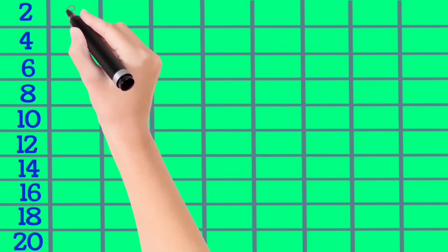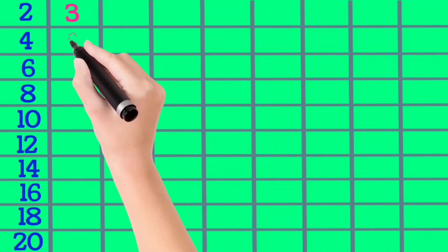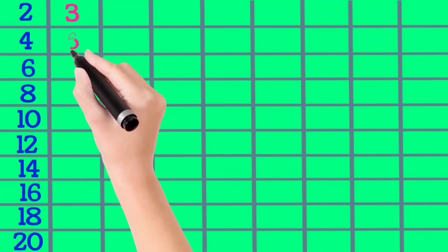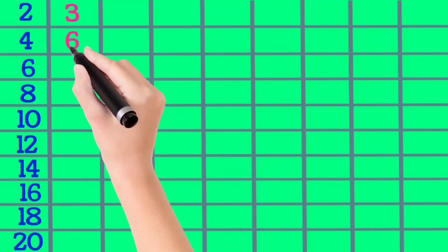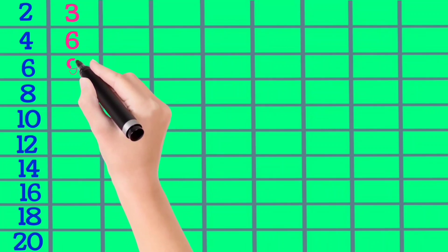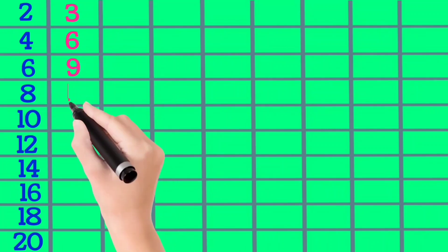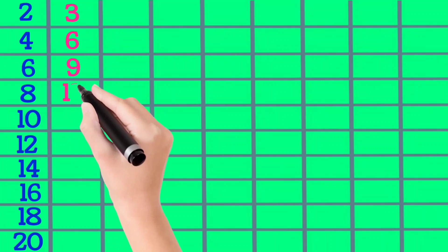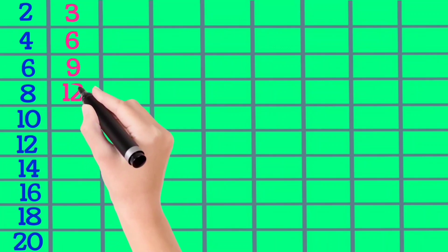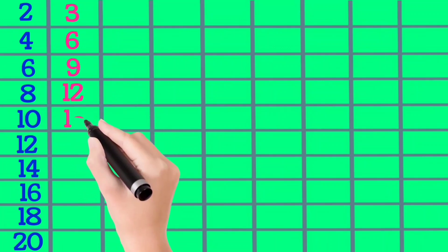3×1 is 3, 3×2 is 6, 3×3 is 9, 3×4 is 12, 3×5 is 15.